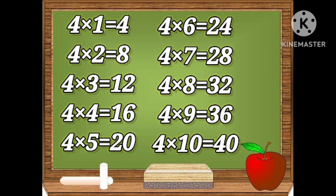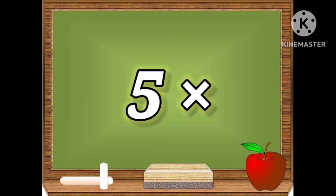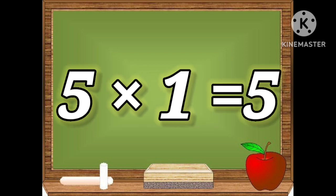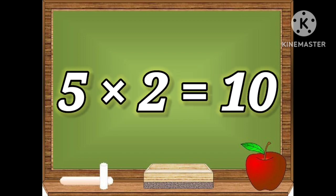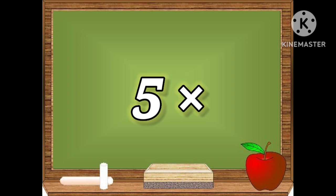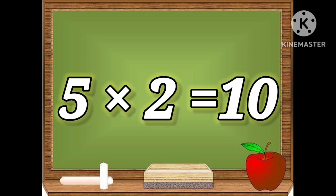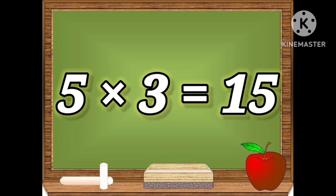Five ones are five. Five twos are ten. Five threes are fifteen.